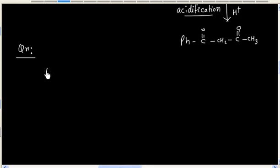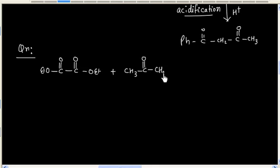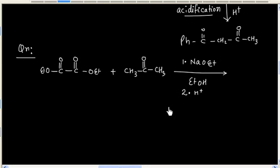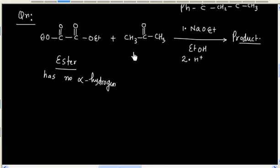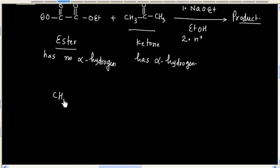Now let us consider this reaction. Ethyl alcohol is the solvent, and in the second step we have acidification. So let us write the product. We have an ester that has no alpha-hydrogen, and this is a ketone that has alpha-hydrogen. So once again, the first step is an acid-base reaction and we will generate the enolate ion.